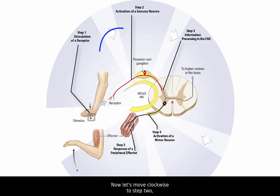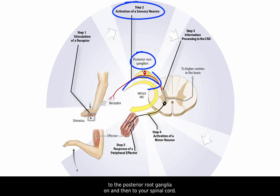Now let's move clockwise to step 2, activation of a sensory neuron. Your stimulated pain receptors shoot action potentials to the posterior root ganglion and then to your spinal cord. Notice that this red line indicates a stimulated sensory neuron and also notice here the cell body of the sensory neuron is located in the posterior root ganglion.